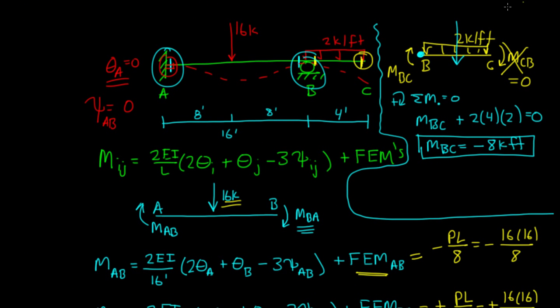So the reaction at B on our diagram is 14.5 kips. In the next video, we'll look at the left side and start drawing the shear and moment diagram for this problem.